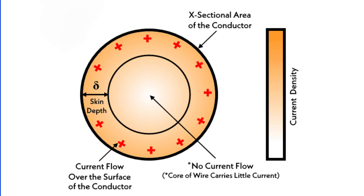This uneven distribution of current means that the effective cross-sectional area available for current flow is reduced, leading to increased resistance and consequently increased power losses and heating of the conductor.